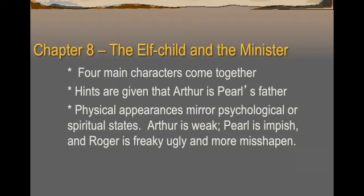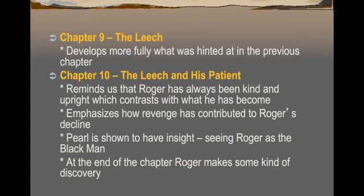In Chapter 8, we are still at the Governor's Mansion, but now all four main characters are brought together for the first time, and we're given hints that Arthur is Pearl's father. He is extremely interested in how Pearl is growing up, trying to see if he can find anything of himself in her. We also see physical appearances mirroring psychological or spiritual states: a very strong Pearl and Hester representing beauty and sin, Arthur becoming weaker, Pearl becoming a little more impish and supernatural-like, and Roger becoming more misshapen, uglier, and darker than before.